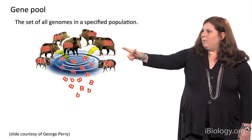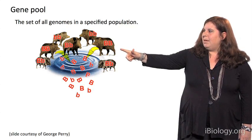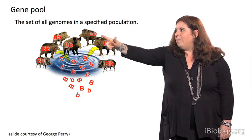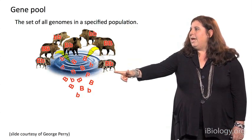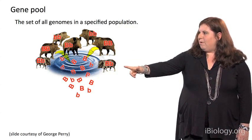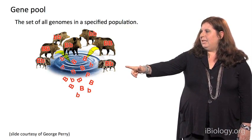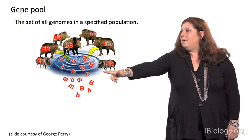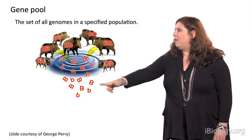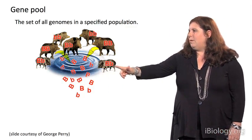And here's an example of an individual who is homozygous for the big B allele, and an individual homozygous for the little b allele, and here's an individual who is heterozygous for big B and little b. And together, the set of alleles in that population represents the gene pool.